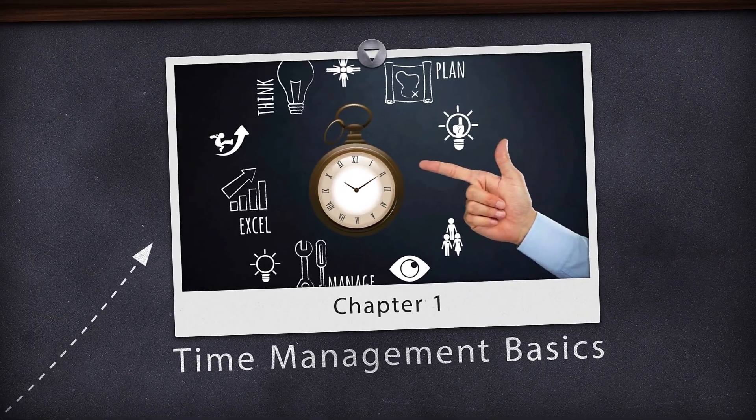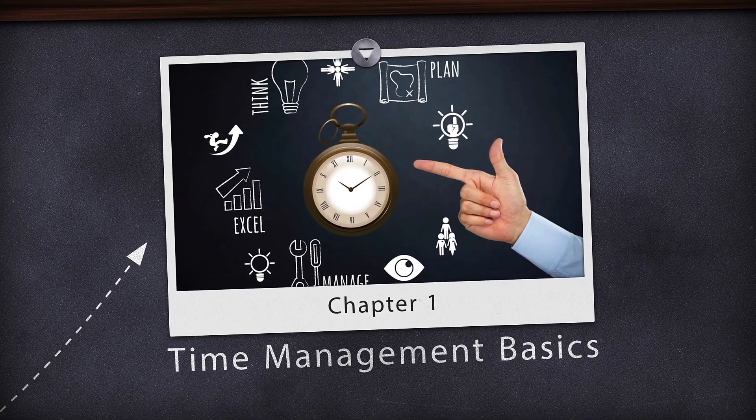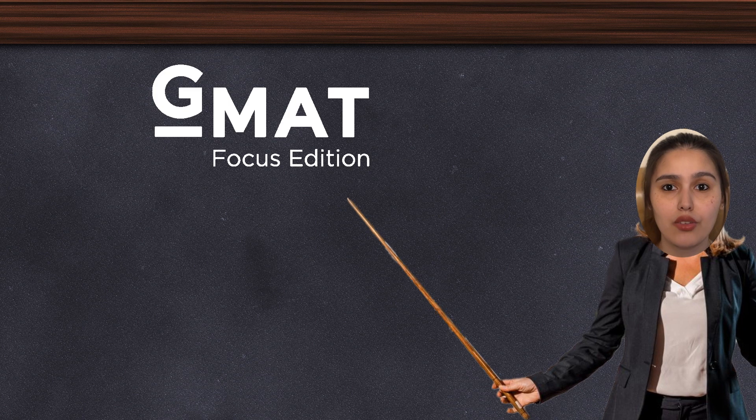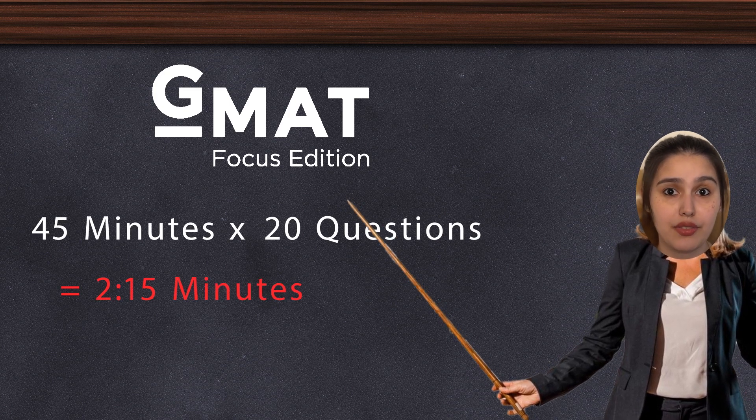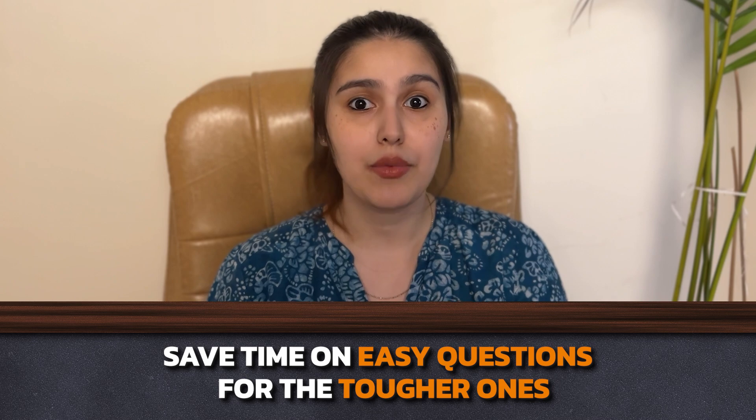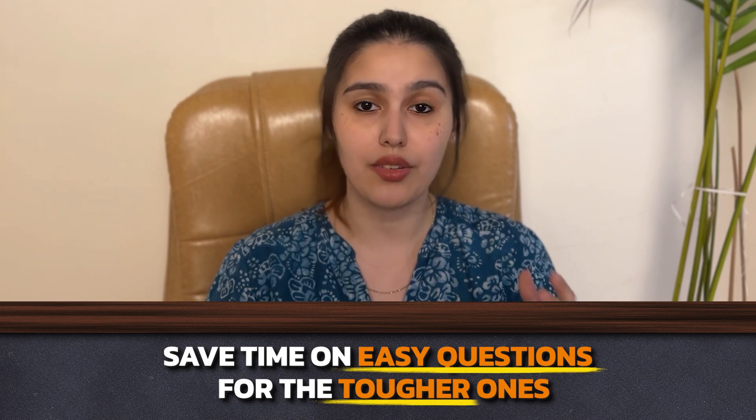Time management basics. First let's talk about managing your time. In the new GMAT focus you get a total of 45 minutes for 20 questions. That's about 2 minutes and 15 seconds per question. But some questions are easier and quicker to solve than others. So you should use the time you save on easy questions for the tougher ones.